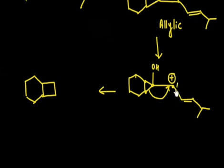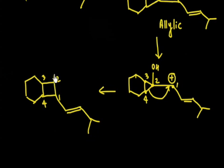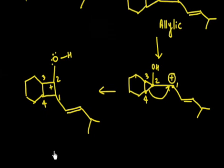Let us number the carbons: carbon one, two, three, and four in the four-membered ring. Carbon number one contains the cyclohexyl group. Carbon number two contains the OH group and also carries a positive charge, because the bond that broke transferred the charge there.